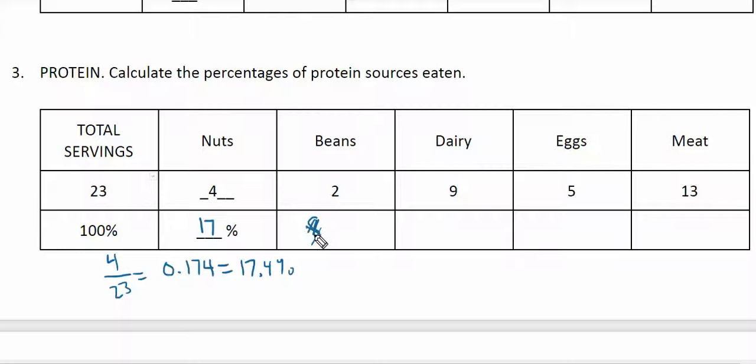So, 8.7%. And you can do the same thing for these other categories. In the end, these percentages should all add up to 100%. You're going to be doing a similar process with these other ones up here at the top.